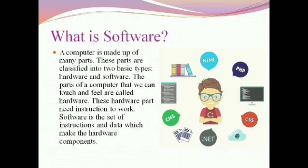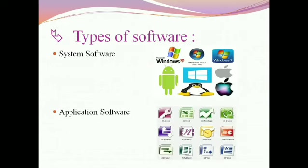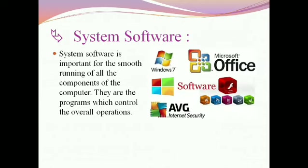Now we are going to learn about types of software. As we know, there are two types: system software and application software. In this picture, we can see many of the software we use in daily life. Let's move to the next topic: system software.